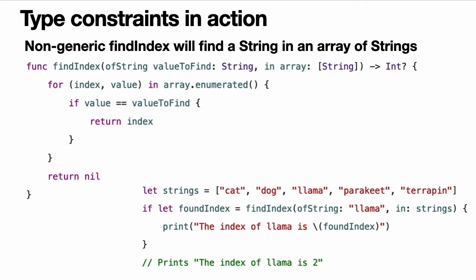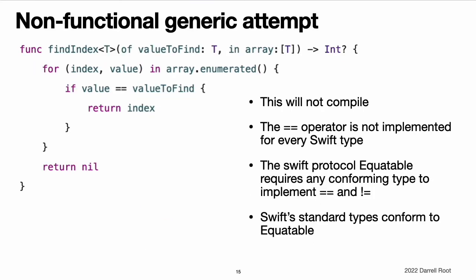Type constraints in action. Here is a non-generic function called findIndexOfStringIn, which is given a string value to find and an array of string values within which to find it. The findIndexOfStringIn function returns an optional integer value, which will be the index of the first matching string in the array if it is found, or nil if the string cannot be found. The findIndexOfStringIn function can be used to find a string value in an array of strings. The principle of finding the index of a value in an array isn't useful only for strings, however. You can write the same functionality as a generic function by replacing any mention of strings with values of some type T instead. Note that the return type of this function is still optional int, because the function returns an optional index number, not an optional value of the array. Be warned, though — this function does not compile, for reasons which we will explain.